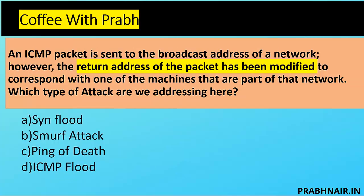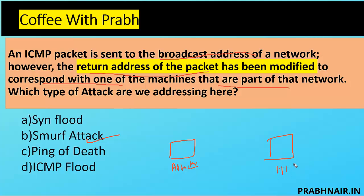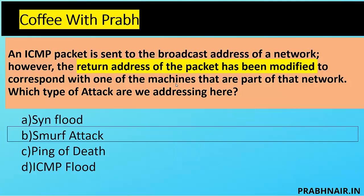Next question: an ICMP packet is sent to the broadcast address of a network, and the return address of the packet has been modified to correspond with one of the machines on the network. What type of attack is this? The answer is Smurf Attack — an attacker spoofs the target's IP (1.1.1.1), sends ICMP requests to thousands of hosts, and those hosts all reply back to the target, overwhelming it. Answer is B — Smurf Attack.